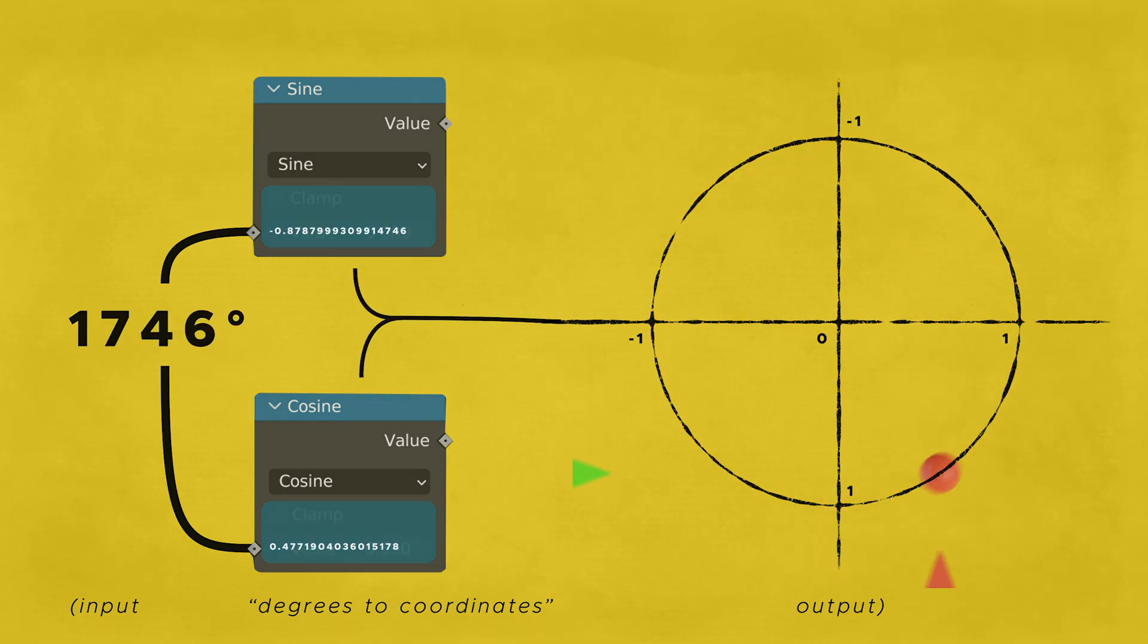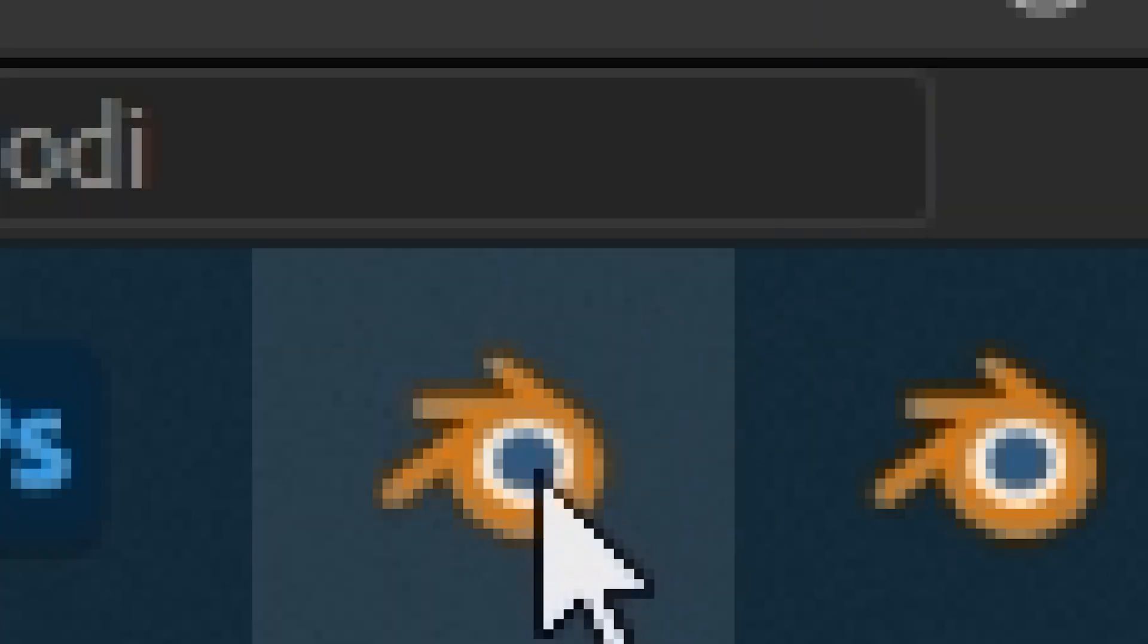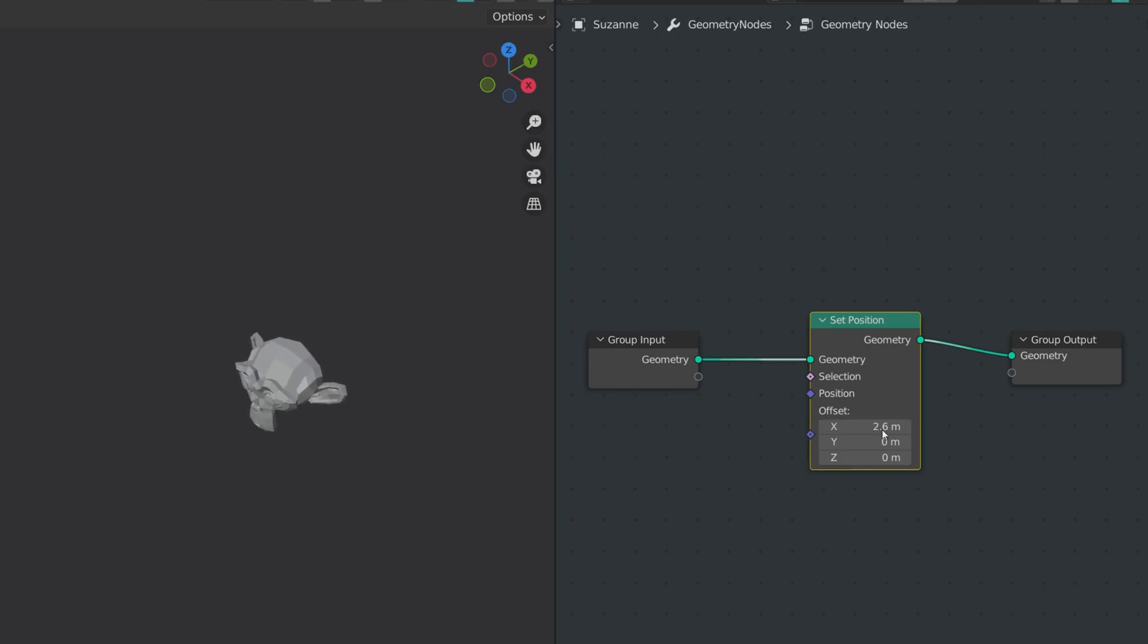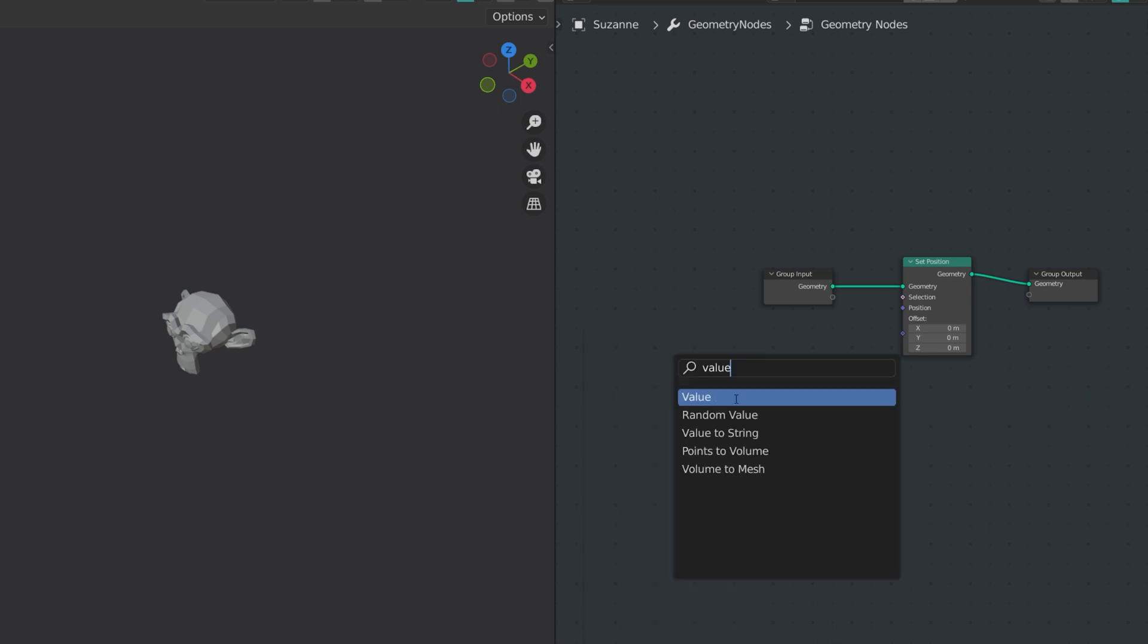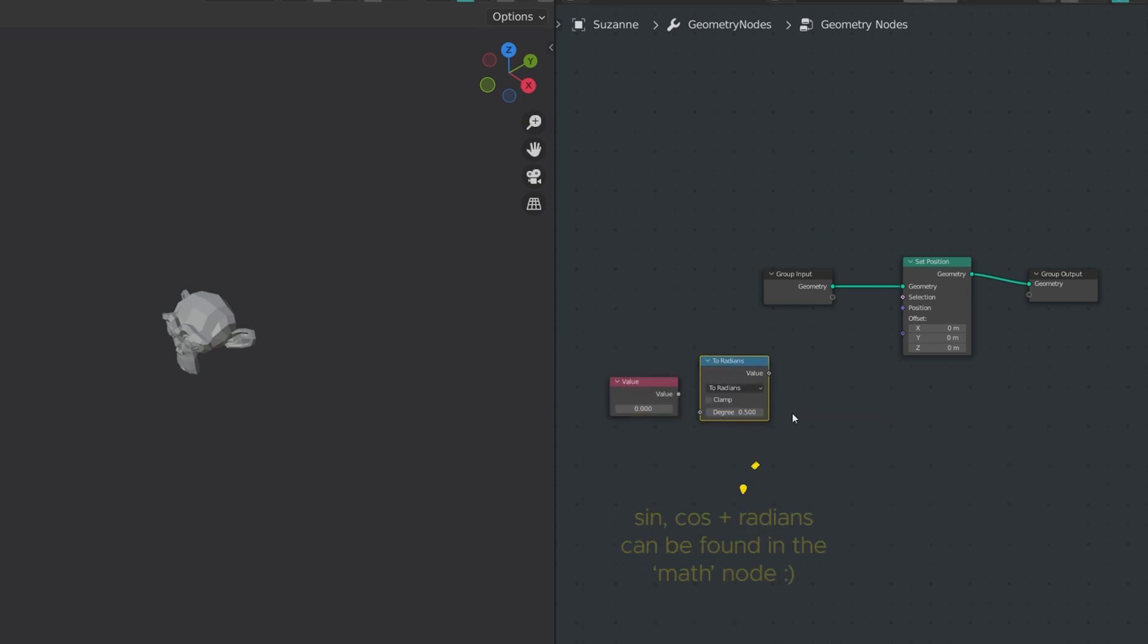In Blender, I sometimes want to move something into some direction, but I only get this crusty old vector input most of the time. So, if I want something to move three units into a specific direction, I now know how. Get a value, convert it to radians, that's what Blender wants you to do, trust me.